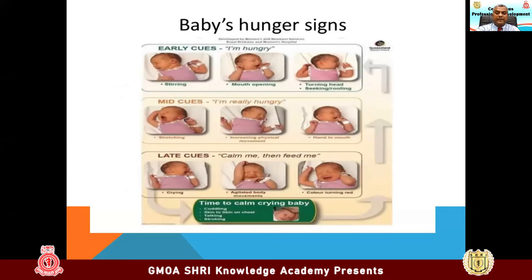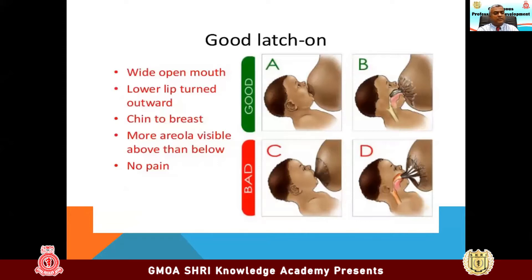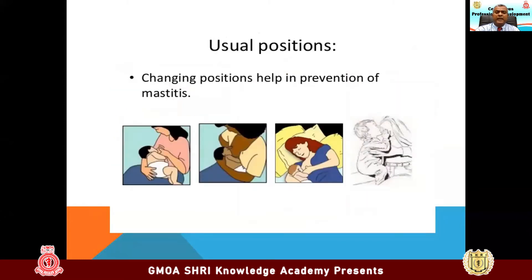Attachment is always a problem. If you achieve good attachment, the nipple as well as almost all the areola is in the baby's mouth — it fixes very well and the baby can suck well. In the case of bad attachment, only the nipple is inside, which allows a lot of air to enter the baby's GI system, causing colic — and that becomes a vicious cycle where the baby won't feed from the mother. Changing positions helps in prevention of mastitis and improves flow. Always try various positions at various times — while lying, sitting, or standing — which will improve the let-down reflex and produce more and more milk.